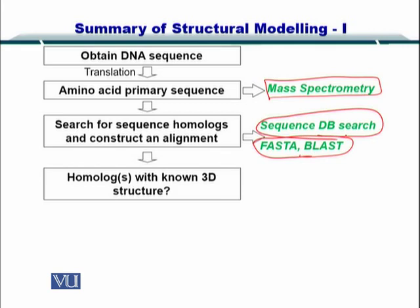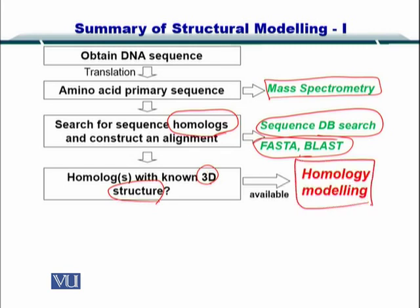Once you have found the homologs — proteins which are similar in sequence — you go on to find the 3D structure of those homologs. You search for similar sequences with high alignment and identity, then go to the PDB database to find the structures for each of those sequences, and thereby draw the homology modeling pipeline.